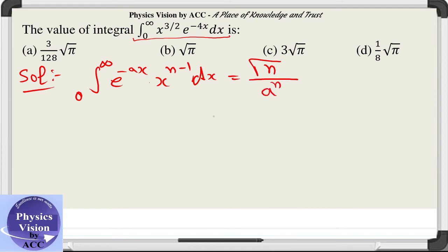By comparing this we got n minus 1 is equal to 3 by 2, that means n is equal to 5 by 2, and a is equal to 4.